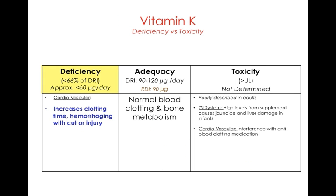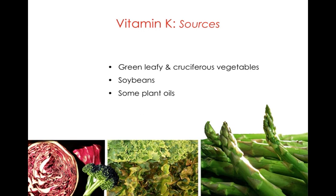Vitamin K is very important in blood clotting. A deficiency of vitamin K can affect your blood's ability to clot and can result in hemorrhage. The upper limit for vitamin K toxicity isn't well established — it may interfere with anti-clotting medication and cause liver damage and jaundice in infants. Sources of vitamin K include green leafy vegetables, soy, and some plant oils.